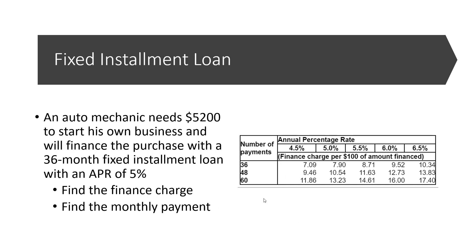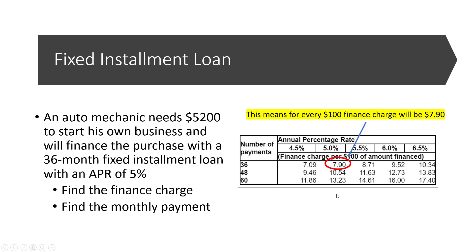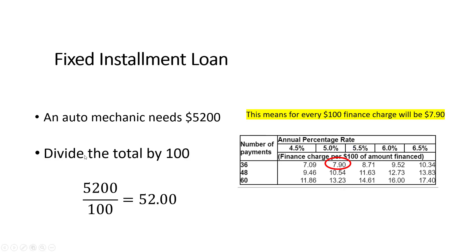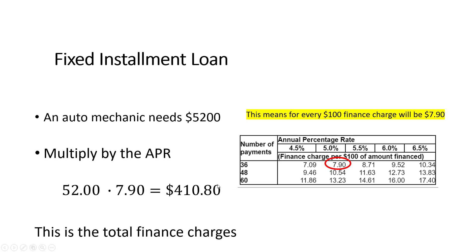We're given this table here. What I would look at is across the number of payments and then under the 5% column. This 7.90 is based on each $100. So what we want to do is take the amount he wants to borrow and divide it by 100, and then multiply the 52 by 7.90. This amount, the 7.90, is based on every $100 — that's why we divided out the 100.